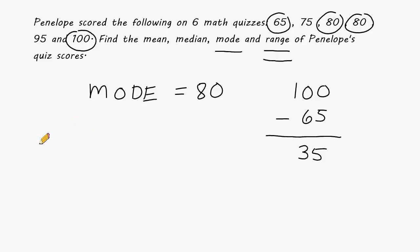So in review, we found that Penelope's mean quiz score was 82.5. And to find the mean score, you have to add up all of the scores, take that total, and divide by how many scores you added up together.